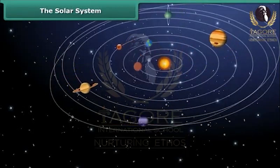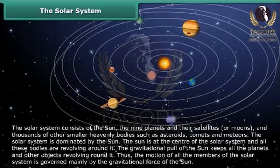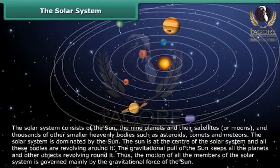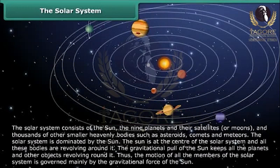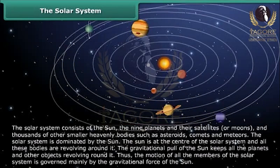The Solar System consists of the Sun, the nine planets and their satellites or moons, and thousands of other smaller heavenly bodies such as asteroids, comets, and meteors. The Sun is at the center of the Solar System and all these bodies are revolving around it. The gravitational pull of the Sun keeps all the planets and other objects revolving around it, so the motion of all members of the Solar System is governed mainly by the gravitational force of the Sun.